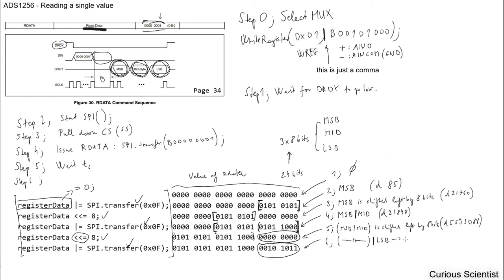We get our final result - the MSB and mid-byte combined with the LSB - and in decimal this is 5,593,131. We have our result and now we close down the communication. Step seven is pulling up the chip select or slave select pin, and finally we end the SPI transaction with SPI.endTransaction. We are done - we have read one value from the ADS1256.